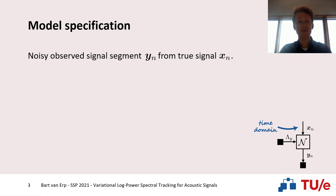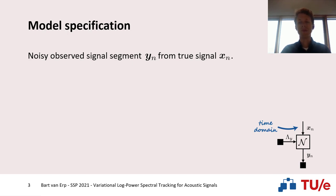Our model will look as follows. We have a noisy observed signal y(n) originating from a true signal x(n). Throughout this presentation, we will visualize our probabilistic model using a so-called vector graph, where the edges represent our random variables and the nodes represent factors within our probabilistic model. As we can see on the bottom right, y(n) is modeled by x(n) with an addition of Gaussian noise.